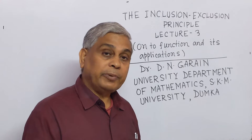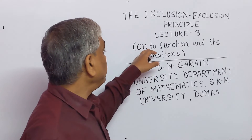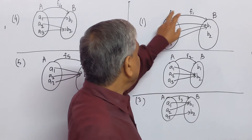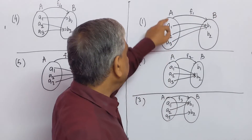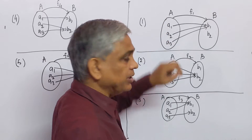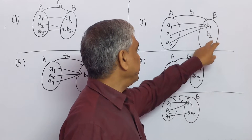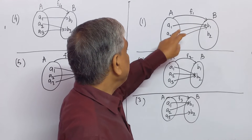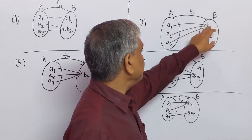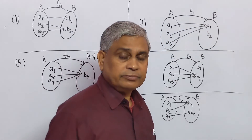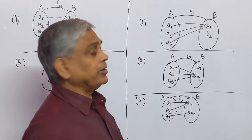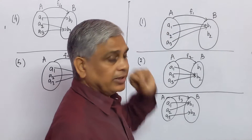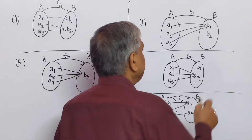In this lecture, I will give the concept of onto functions and their applications. Let capital A and capital B be two sets. Capital A contains elements A1, A2, A3, and capital B contains elements B1 and B2. Let F1 be a function such that the image of A1 is B1, image of A2 is B1, image of A3 is B1. Therefore, B2 has no pre-image. B1 is the only image of A1, A2, A3, and this type of function is known as an INTO function.